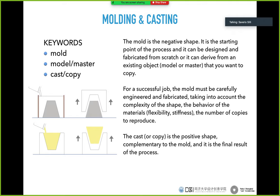The mold is the negative shape. It is the starting point of the process, and it can be designed and fabricated from scratch, or it can derive from an existing object — a model or a master. In our assignment, we will first create a master, then we will create a mold, and then we will create a cast.